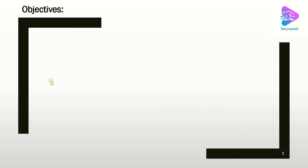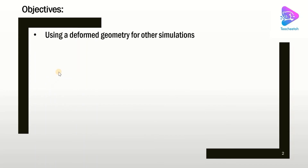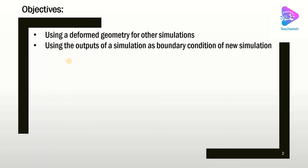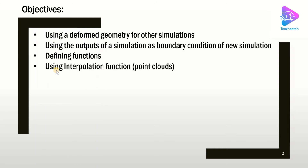What are the objectives of today's lecture? First, we are going to discuss how to extract a deformed geometry from one simulation and use it for another. We will also discuss how to use the outputs of a simulation as the boundary condition of another simulation when the two physics cannot be combined. We'll cover function definitions and, finally, interpolation functions as a very important tool to insert point cloud data into COMSOL.